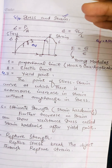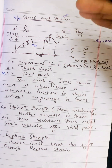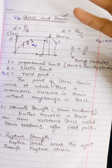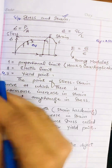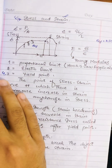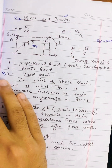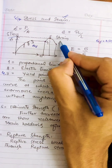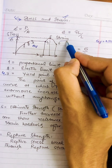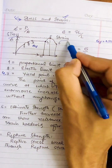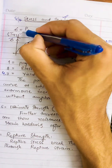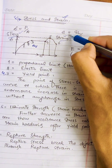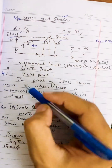Now we are going toward the stress-strain curve of mild steel — how mild steel reacts upon applied stress and how it shows strain. Note that stress is the dependent variable and strain is the independent variable.